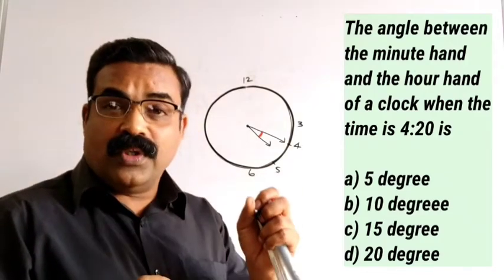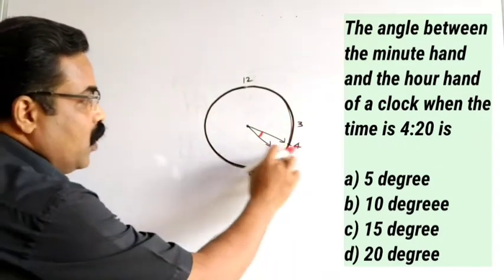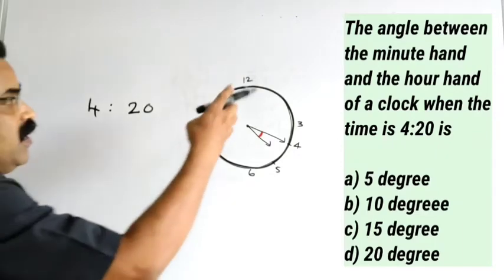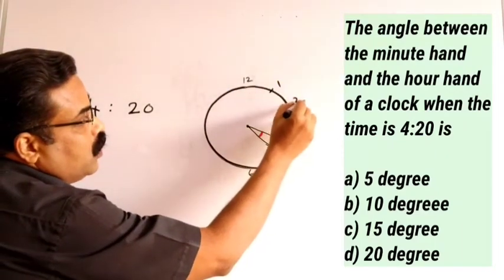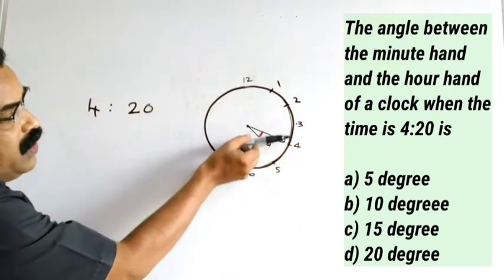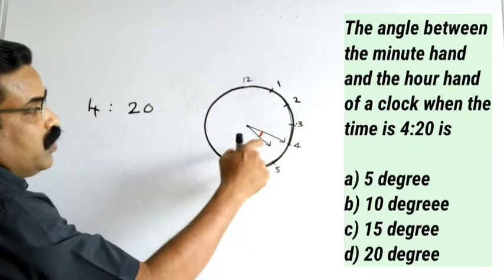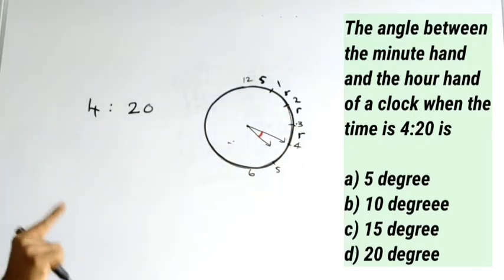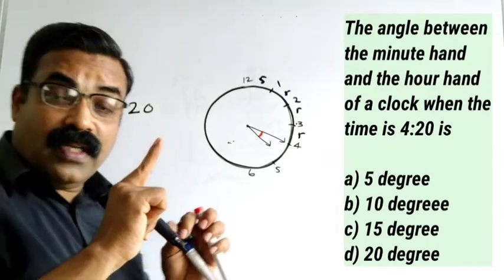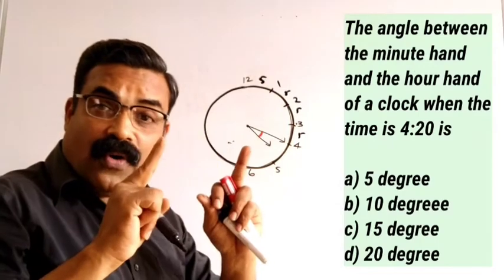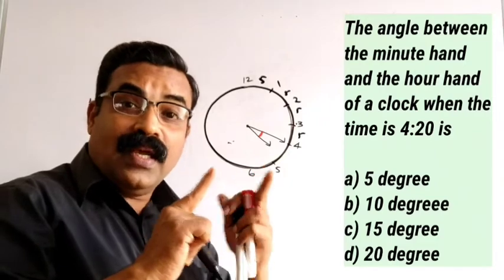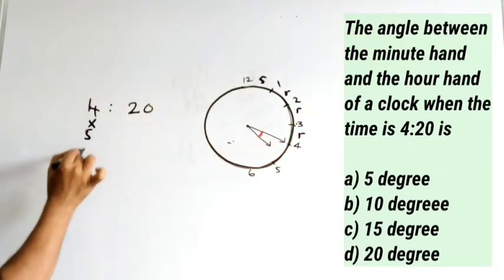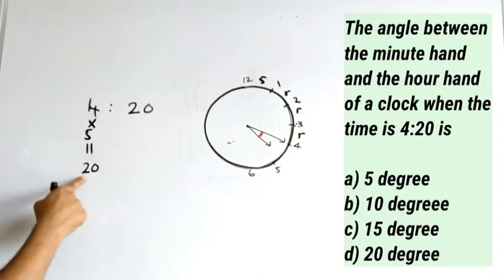I'm telling you how to solve these type of questions very quickly, within seconds. Here the time is 4:20. Every one number on the clock represents five minutes. What we are going to do is convert this 4 into minutes — 4 multiplied by 5 — because we are finding out the angle. This needle is just after 4, so multiply 4 by 5 to get 20.